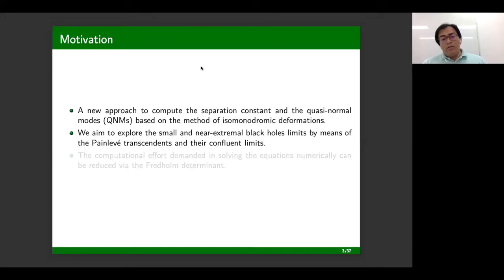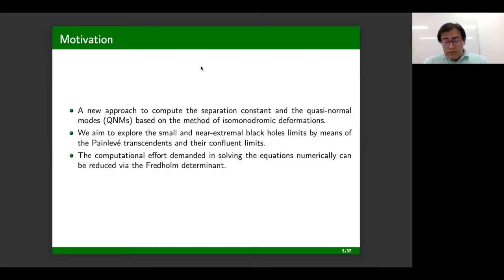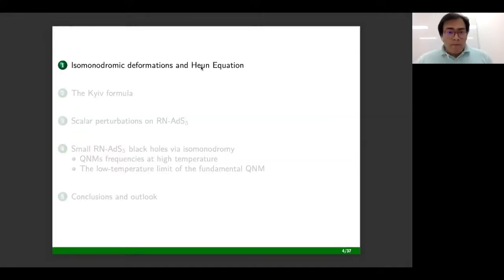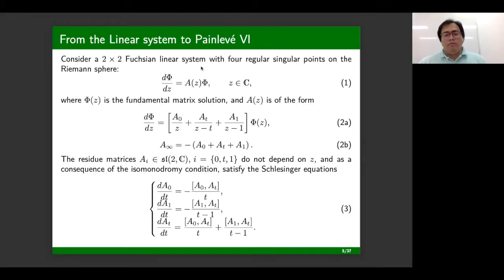If time allows, I will briefly discuss the confluent limit of Painlevé-6 to Painlevé-5 and how this is related to the near-extremal black hole limit. Also, using the Fredholm determinant representations of the isomonodromic tau function, one can decrease the computational effort needed to find the quasi-normal modes numerically. Most of the audience is likely familiar with linear systems, but I will try to be as specific as I can. We consider a 2×2 Fuchsian linear system with four regular singular points on the Riemann sphere.